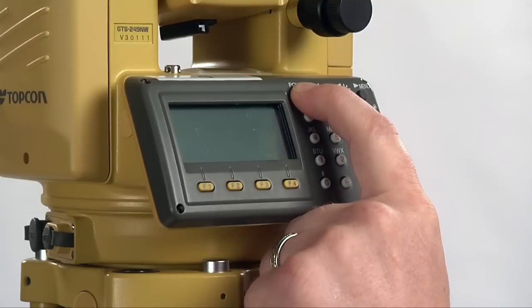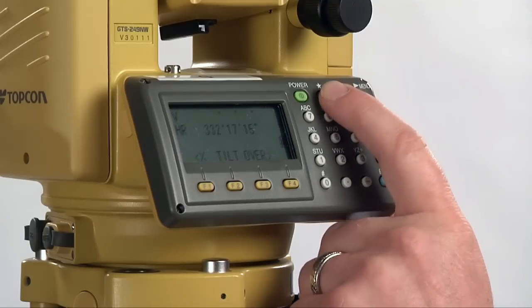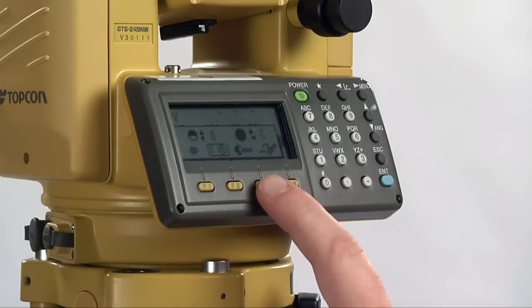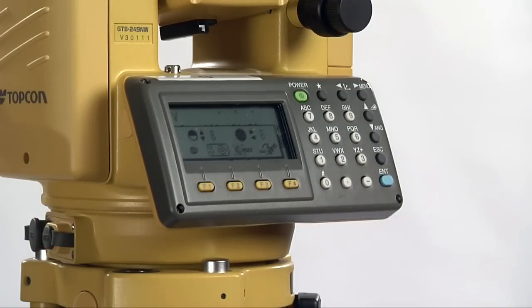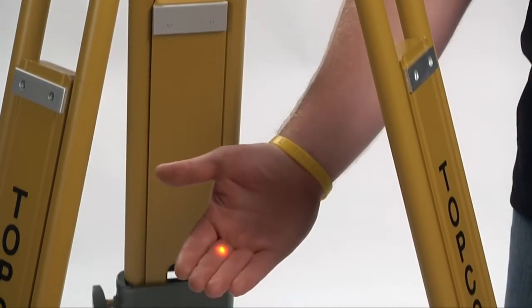This total station is equipped with a laser plummet. To start, we must turn the power on. After waiting several seconds for the machine to fire up, press star, F3 to turn the laser on. The laser plummet projects the center of the total station right down to your point.